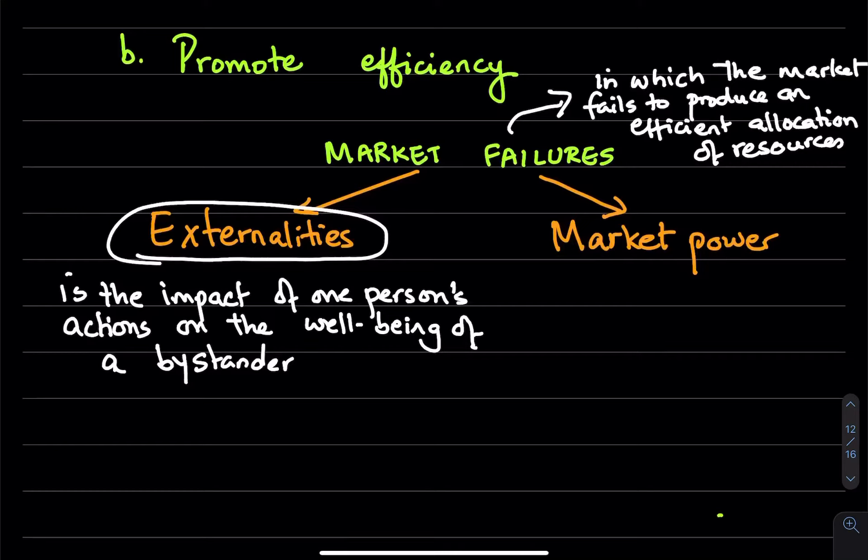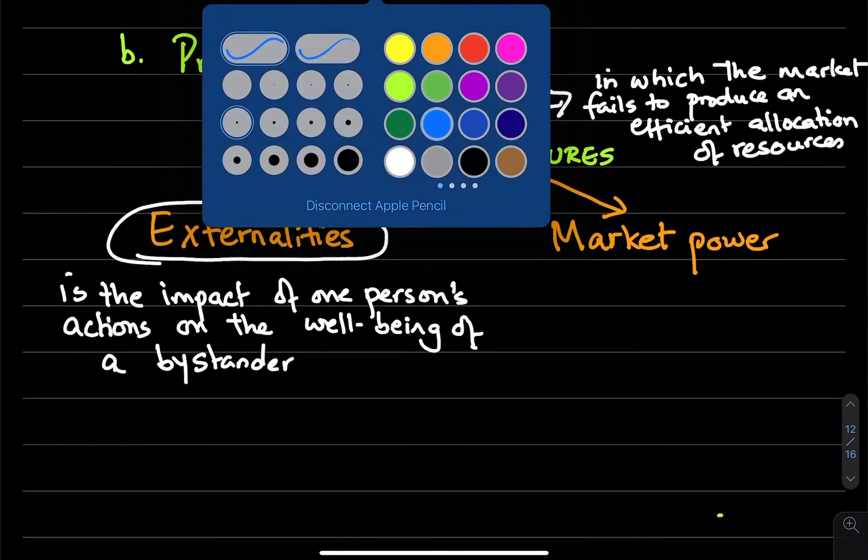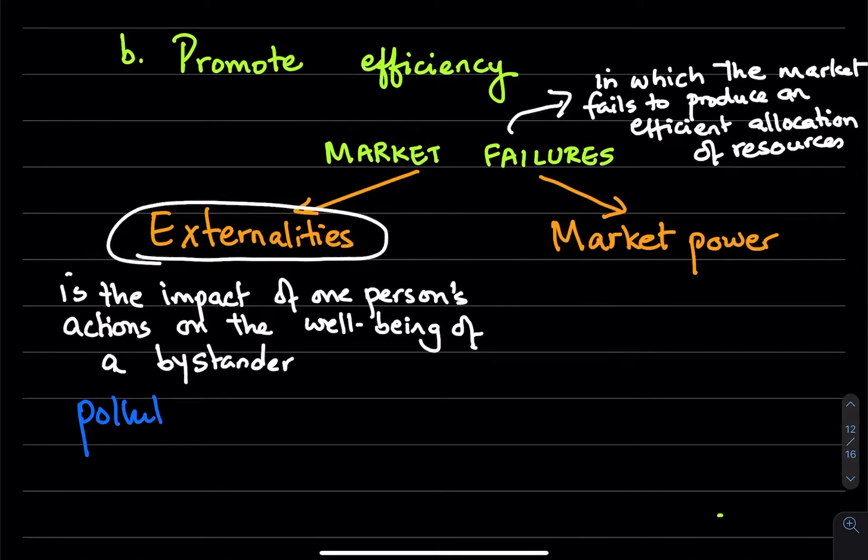Similarly, externalities can exist in the economy and we would need the government to intervene, to improve these outcomes. So one example of a negative externality is pollution. When the production of a good pollutes the air and creates health problems for those who live near factories, the market left to its own devices may fail to take this cost into account.